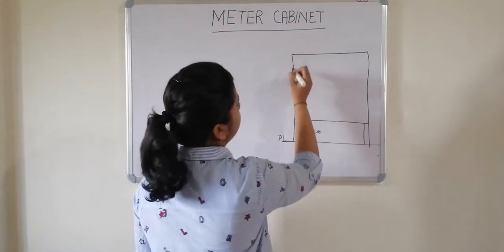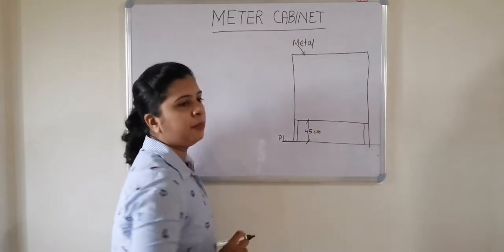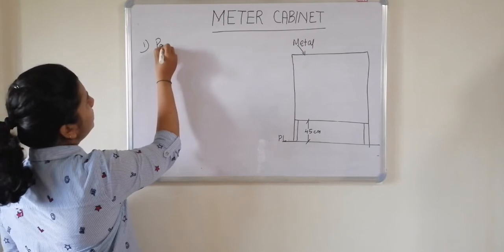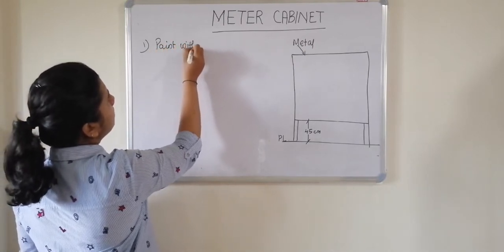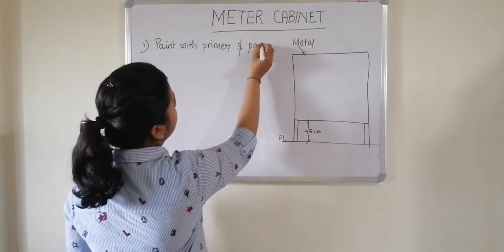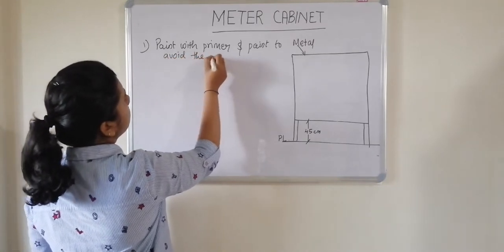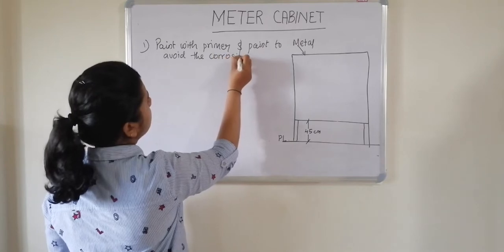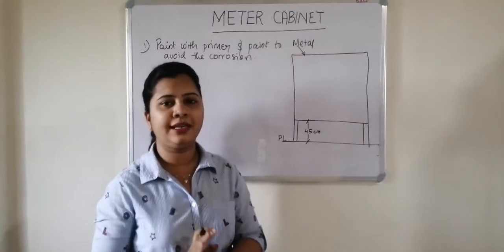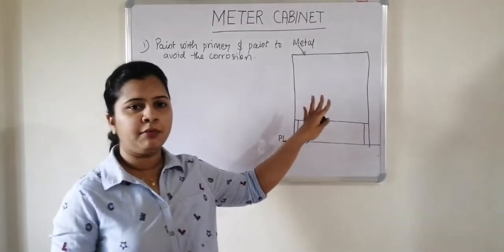Now this panel, if it is of metal, the material of this panel is metal, then you should always paint it with primer and paint. The first point is painted with primer and paint to avoid the corrosion metal panel. Because if this metal panel gets corroded, then it can become very dangerous for your electricity connections. So the first thing you should take care is that this metal panel is painted with primer and paint.